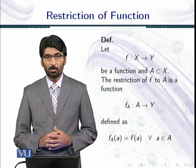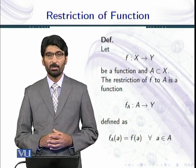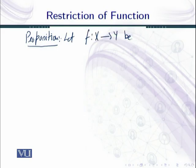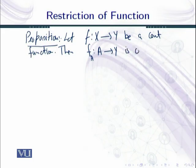So let us first state our proposition. Our proposition is: Let we have a function f from X to Y be a continuous function, then the restriction of f to A is continuous, where A is a subset of X.